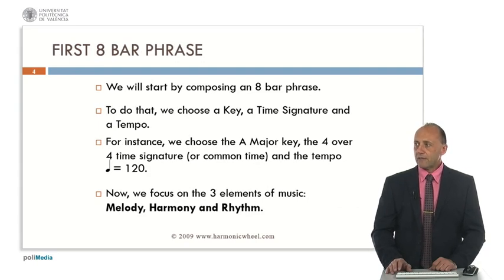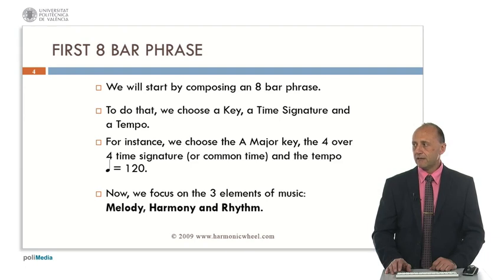We will start by composing an eight-bar phrase. To do that, we choose a key, a time signature, and a tempo. In this case, we chose the A major key, the four over four time signature, or common time, and the tempo — crotchet, or quarter note, equal to one hundred twenty.